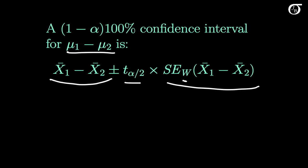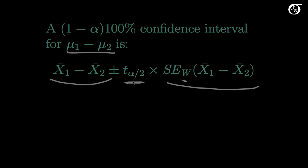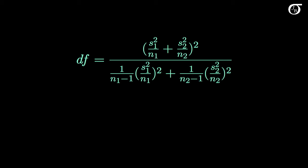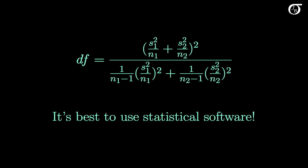One tricky part is that the degrees of freedom for the t are a complicated formula. It's not impossible to calculate by hand, but overall it is best to use statistical software to calculate this.